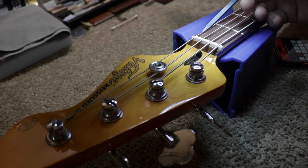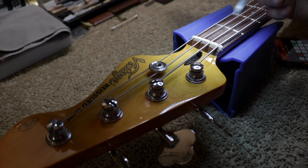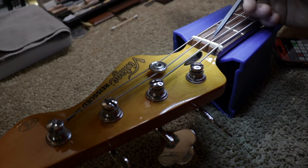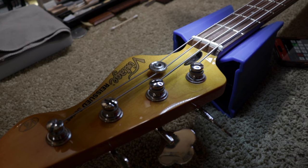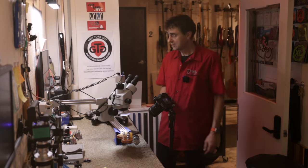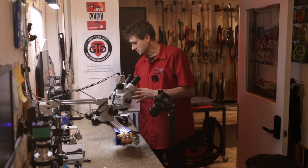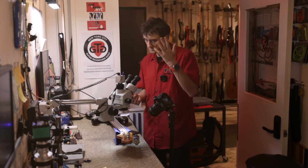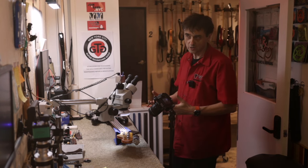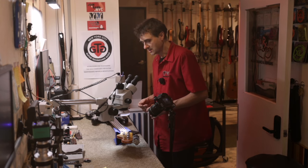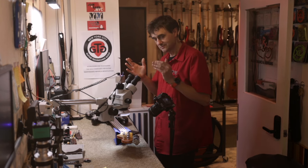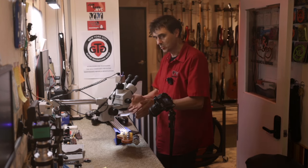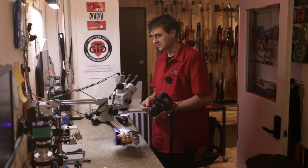We are going to be looking at the nut. First at the D string and then at the A string, and then compare the two. Now this is not an expensive bass, which means that it's not well made. Obviously they need to cut corners, and it's because of that that we get to see what we are about to see.